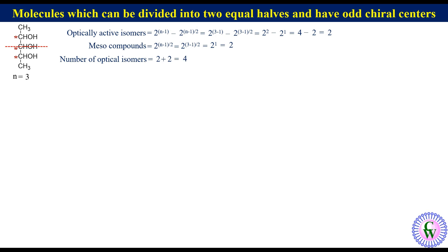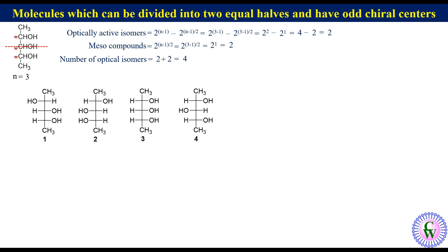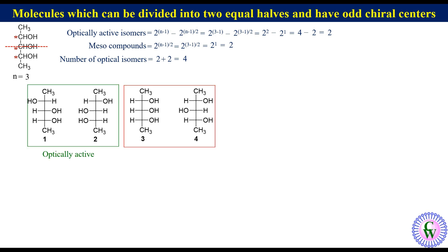These are the 4 optical isomers, out of which isomers 1 and 2 are optically active, while isomers 3 and 4 are meso compounds.